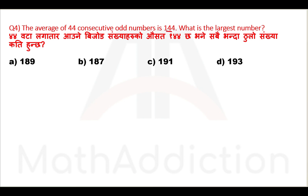The average of 44 consecutive odd numbers is 144. If we have to solve this question, we can apply this technique.